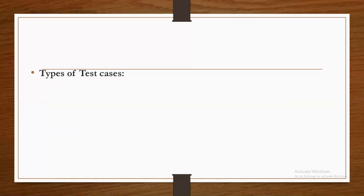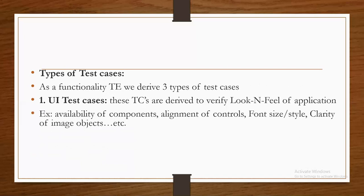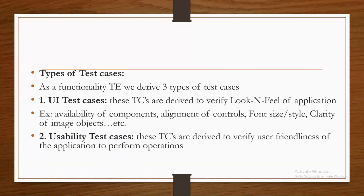Next, types of test cases. As a functional test engineer, we derive three types of test cases. First, user interface test cases. These test cases are derived to verify the look and feel of the application — like availability of components, alignment of controls, font size, font style, clarity of image objects, and whether control spelling is correct. If you derive test cases to verify these things, those are called user interface test cases. Second, usability test cases. These test cases are derived to verify the user-friendliness of the application.